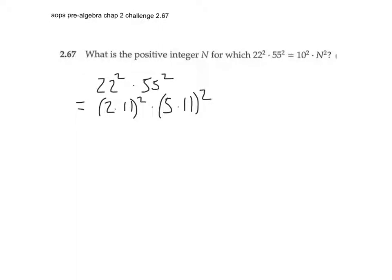Okay, so in this one, once again we're going to try and find twos and fives. So 22 is 2 times 11, 55 is 5 times 11. Okay, so let's multiply that out, so we get 2 squared times 11